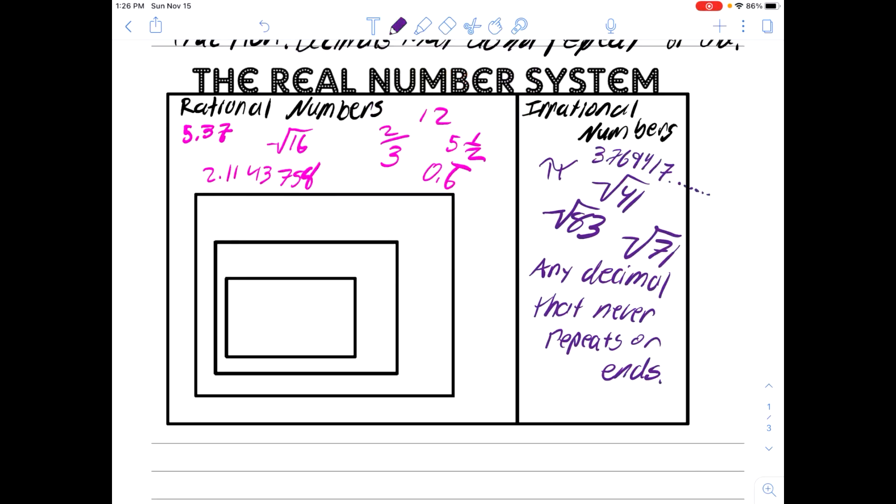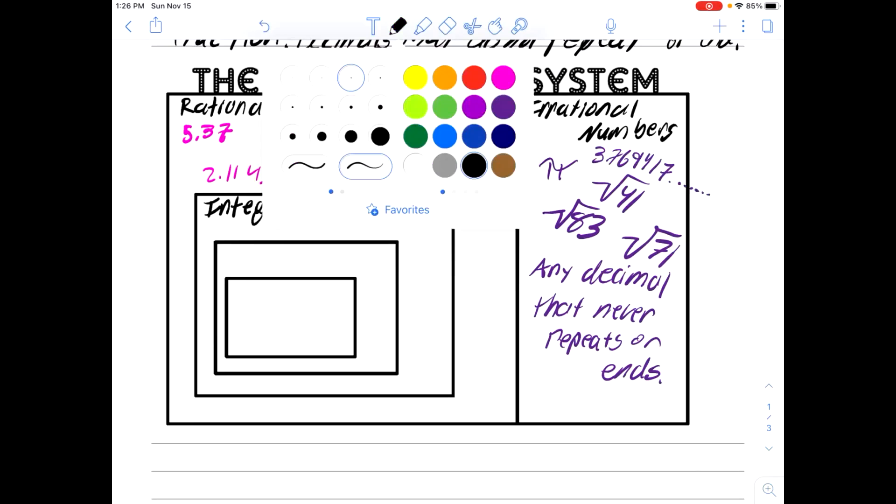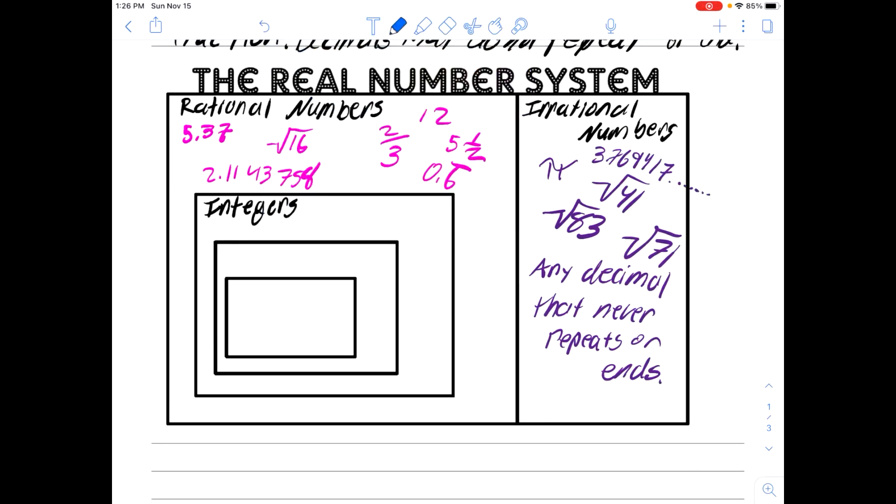Now, as you can see on the rational side, there's several more classifications. So the next classification are the integers. Integers are positive or negative whole numbers. So this includes negative 5, it includes 3, it includes negative 2, it includes 0, which is neither positive nor negative. It includes 70,000.